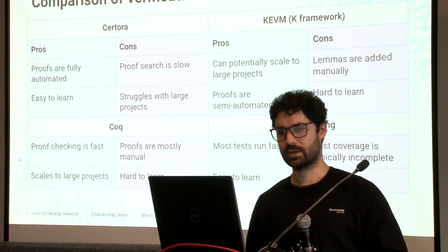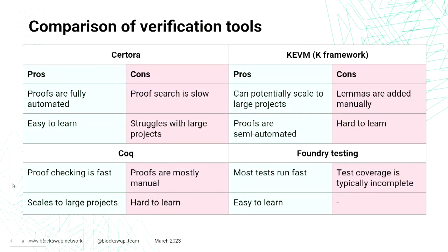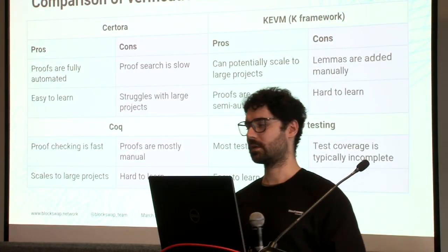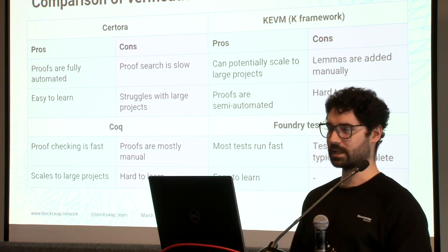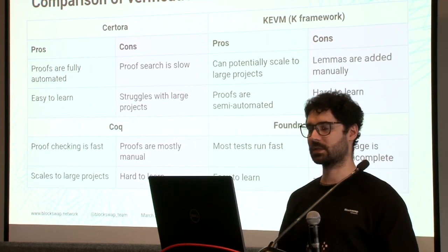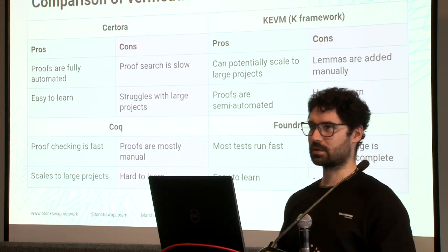Another alternative is Coq, which has super-fast proof checking — it is just type checking. However, the proofs are mostly manual: you have to write all the proof terms yourself, as we saw in type theory, which can be difficult and take a long time. But Coq scales to large projects, as demonstrated by the verification of entire compilers. It is hard to learn and requires a lot of expertise to do the proofs manually.